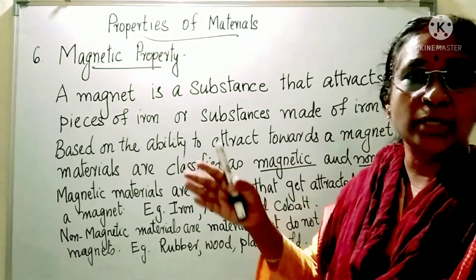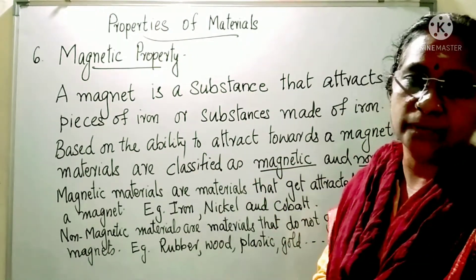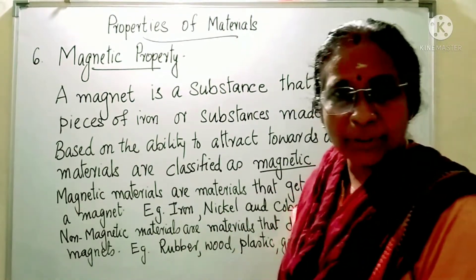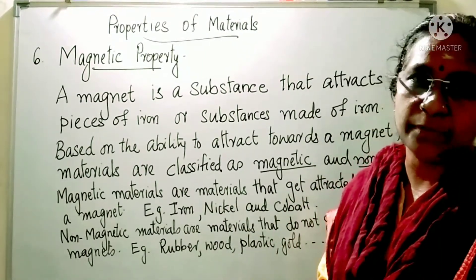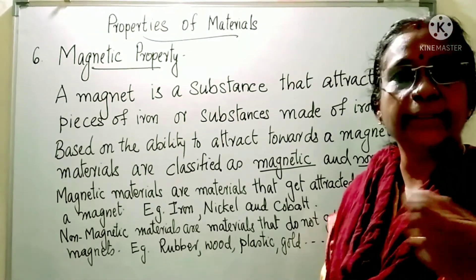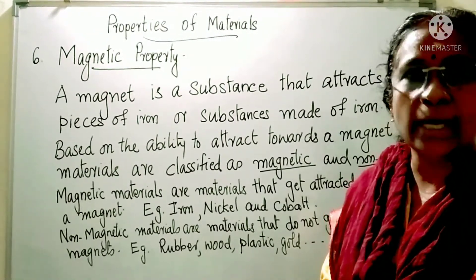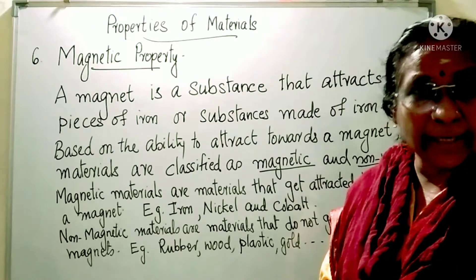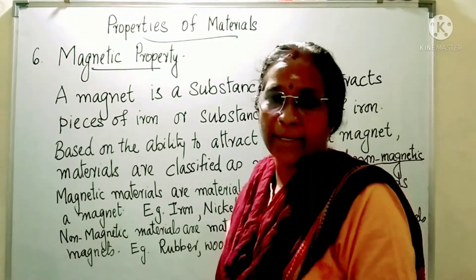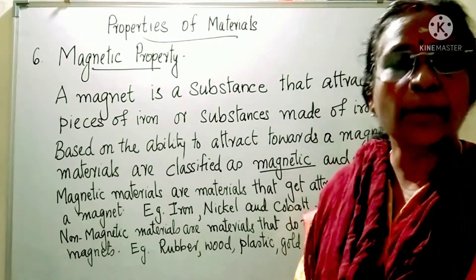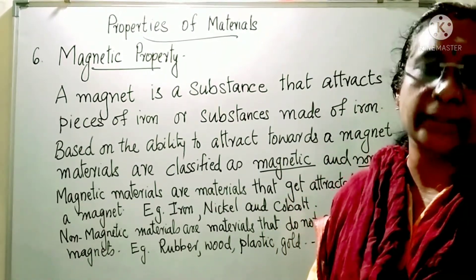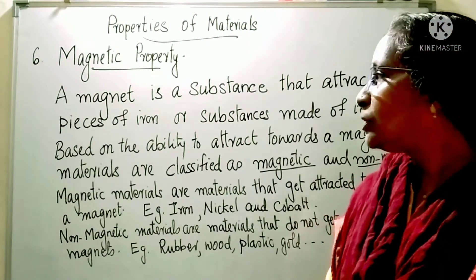If you divide the things around us into 2 groups: the things which get attracted towards the magnet are magnetic substances, and the other group is non-magnetic substances. Non-magnetic substances do not get attracted towards the magnet.